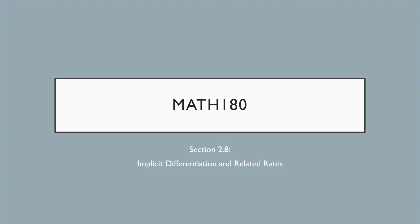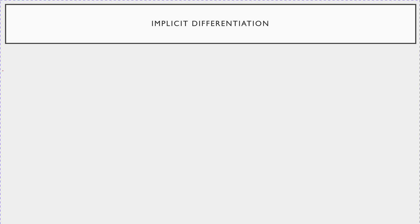Hi class. In this video I want to walk you through section 2.8, which is talking about something called implicit differentiation, which then leads into something called related rates. What I'm going to do in this lecture is introduce the topic of implicit differentiation, show you a few examples, and then have that drive into what exactly related rates are. So first off, what exactly is implicit differentiation?